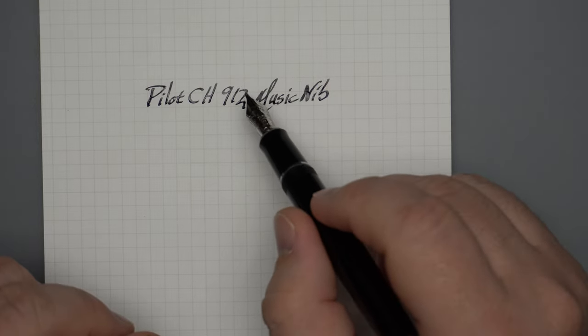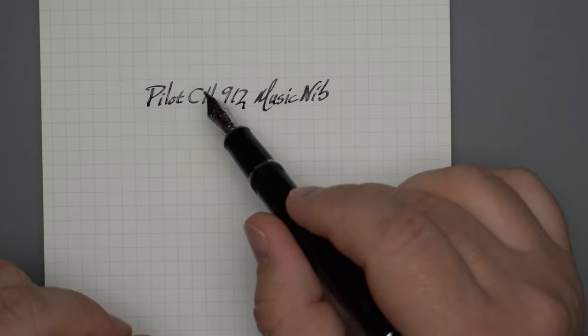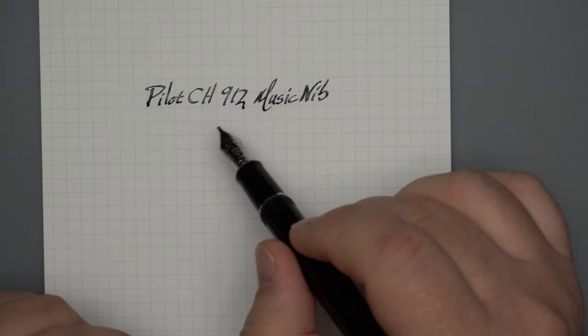You've also got a nice bit of characteristic, you know, sort of narrow and wide lines because of the stubby character of this nib.